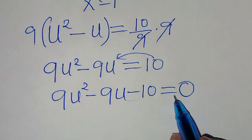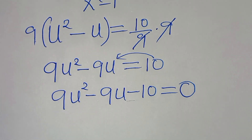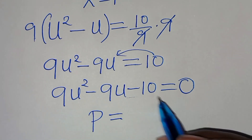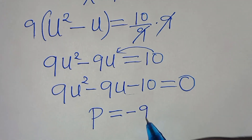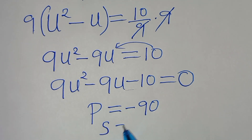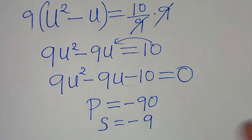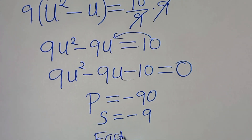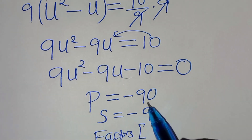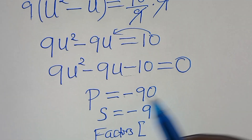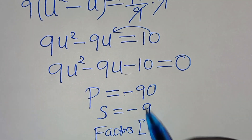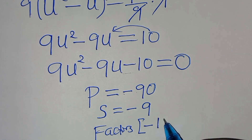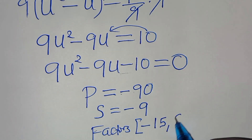This is a quadratic equation we can solve by factorization. The product is 9 × (-10) = -90, and the sum is -9. We need two factors that multiply to -90 and add to -9. Those two factors are -15 and 6.